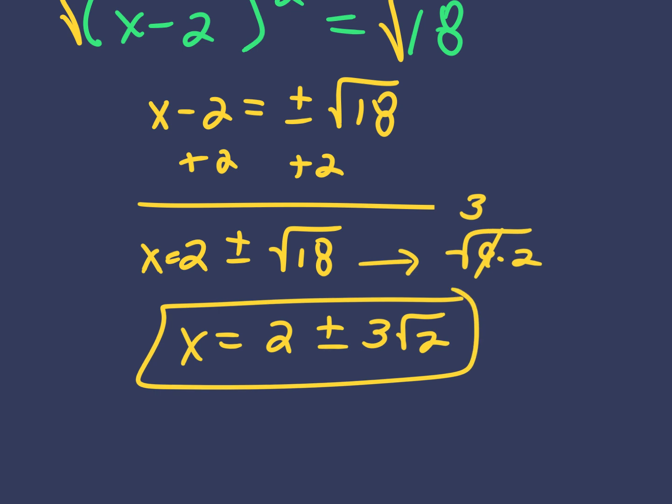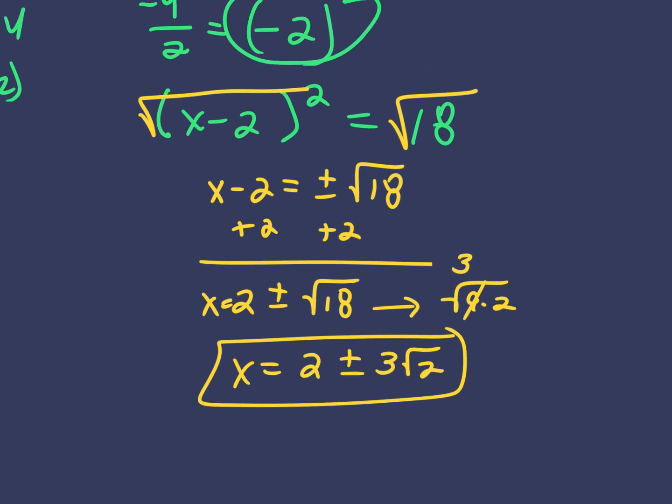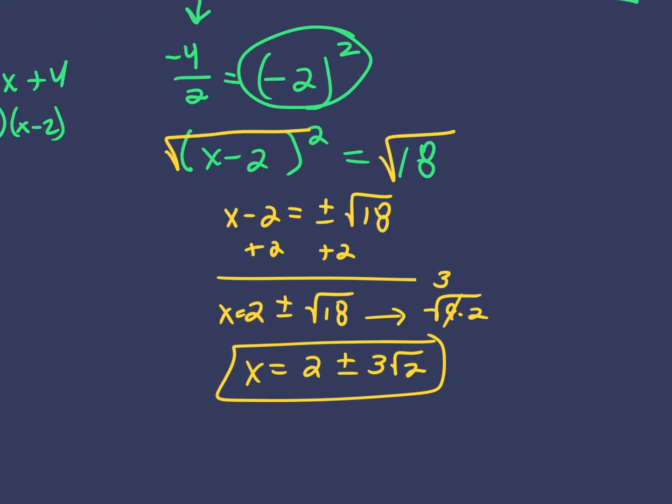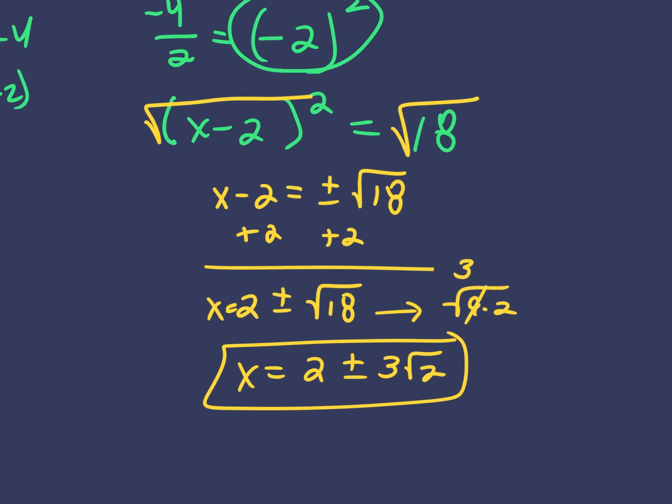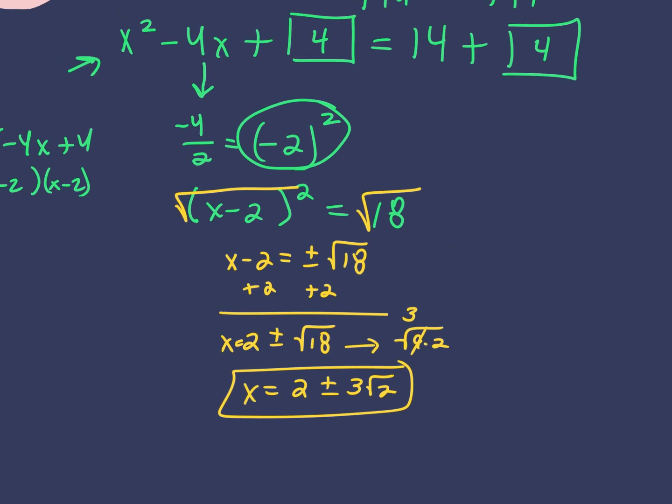The reason you use completing the square is because this quadratic doesn't factor. So if you get to a problem from now on where something doesn't factor, your two options are completing the square or the quadratic formula. Some of you will always prefer the quadratic formula, some will prefer completing the square — that's fine. But the one question on the quiz that says 'solve by completing the square,' you have to do it that way.